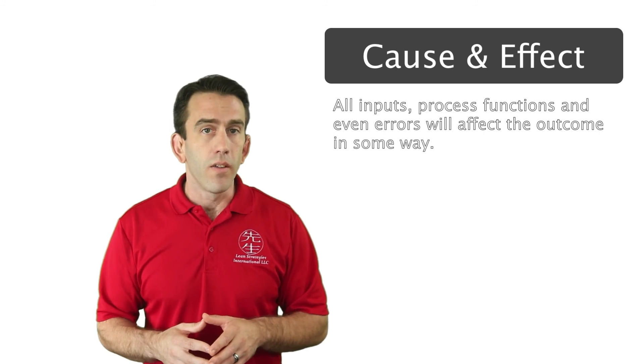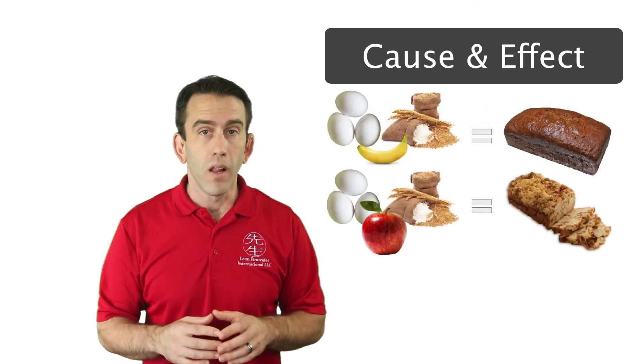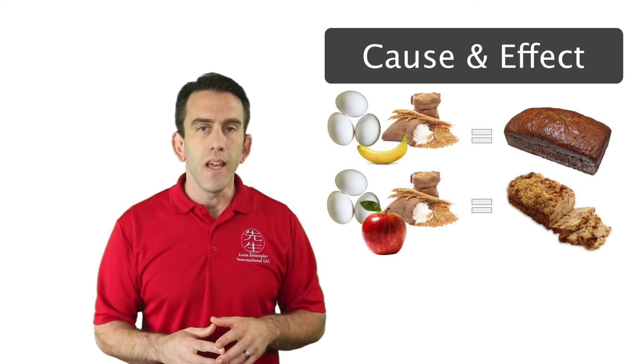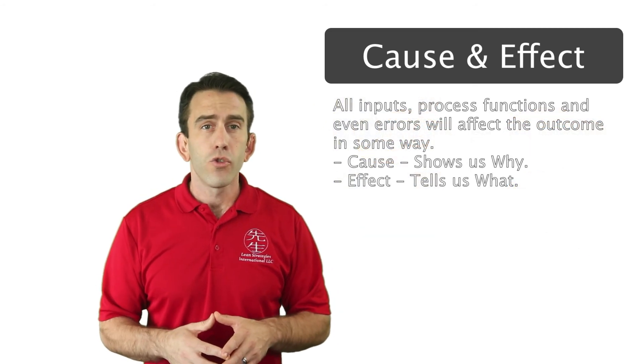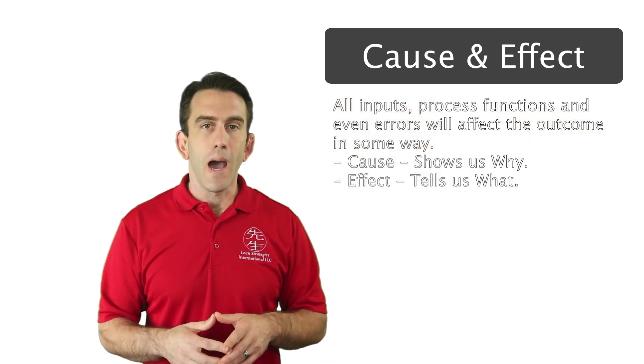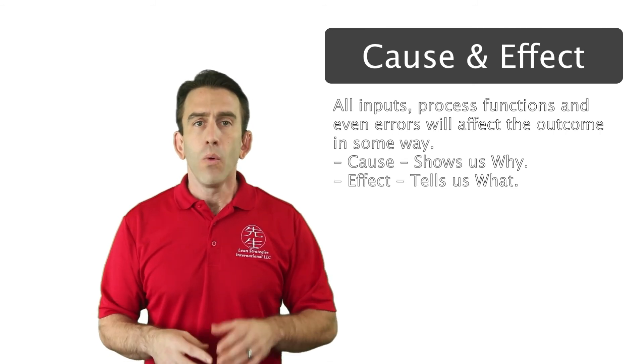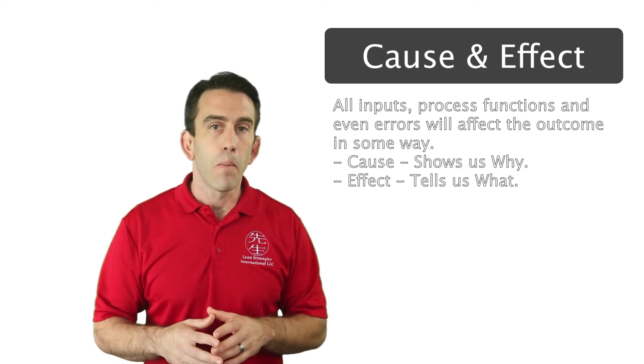Looking back at our banana bread, it becomes clear that if we change some elements in the problem solving formula, it will have an impact or effect on the outcome. As you can now see, the cause shows us why something happens and the effect tells us what happens. When we apply this concept to Six Sigma, it allows us to then look at a process and see how the process will allow for variation.